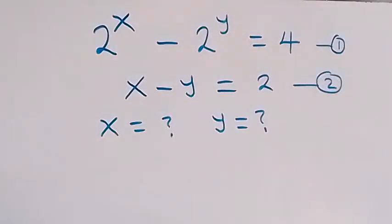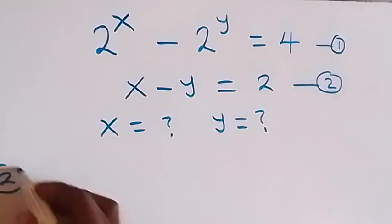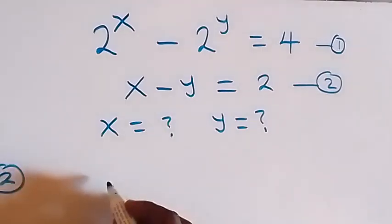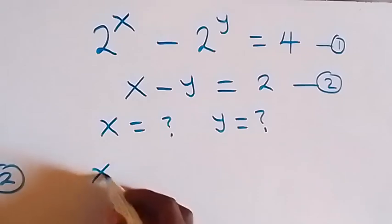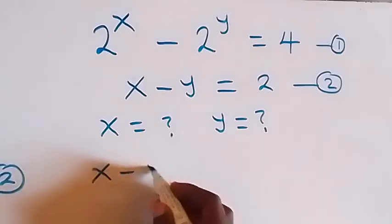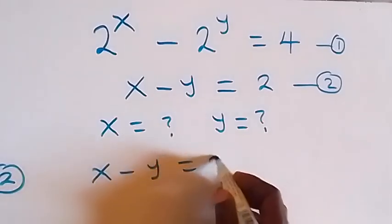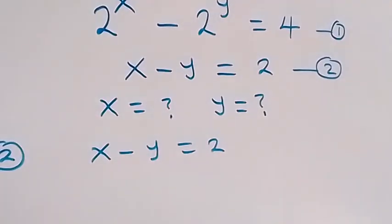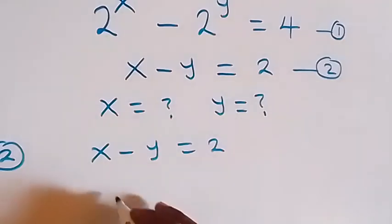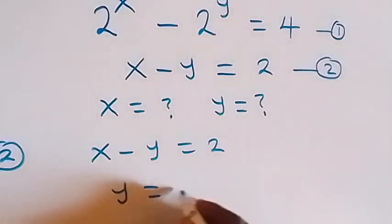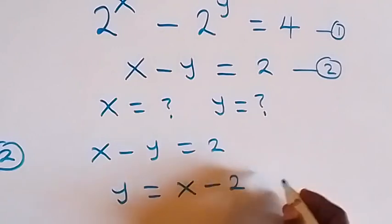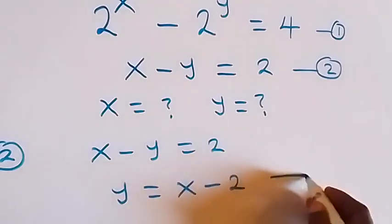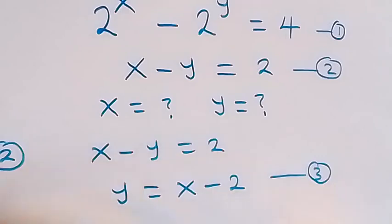From equation 2, we have x minus y equals to 2. Now when we make y the subject here, we get y equals to x minus 2. Now we can label this as equation 3.